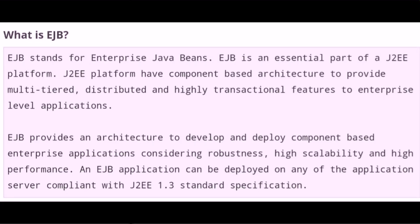What is EJB? EJB stands for Enterprise JavaBeans. EJB is an essential part of the Java 2E platform. The Java 2E platform has a component-based architecture to provide multi-tiered, distributed, and highly transactional features to enterprise level applications. EJB provides an architecture to develop and deploy component-based enterprise applications considering robustness, high scalability, and high performance. An EJB application can be deployed on any application server compliant with the Java 2E 1.3 standard specification.